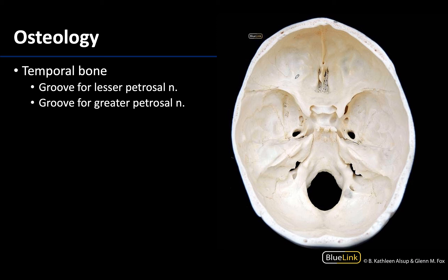Now looking at a superior view of the basicranium, let's understand where to locate two other structures that I would classify as among the more difficult to identify. These are the grooves for the petrosal nerves. The groove for the lesser petrosal nerve is going to be right around this region here — it is ever so slight of a groove. It looks like it is heading towards the foramen ovale, which makes sense because that is how the lesser petrosal nerve exits the skull. The groove for the greater petrosal nerve is supposedly a little bit deeper and more obvious. It looks like it is heading for the foramen lacerum, right about here in this region. So this one is the groove for the lesser petrosal, and this will be the groove for the greater petrosal.